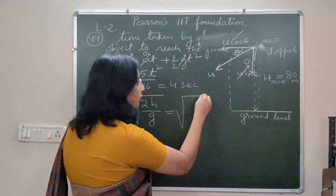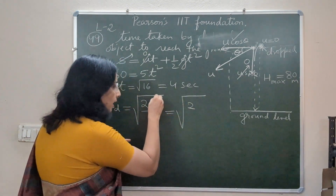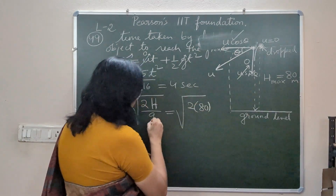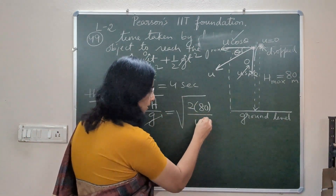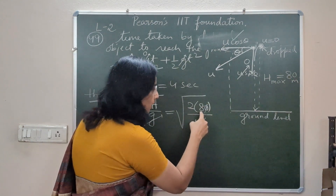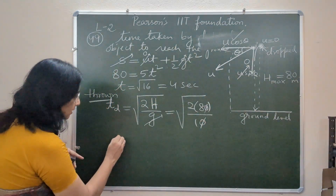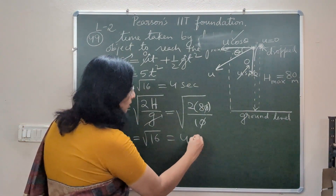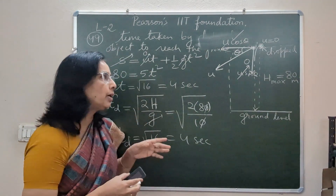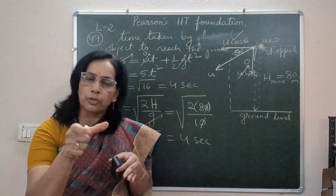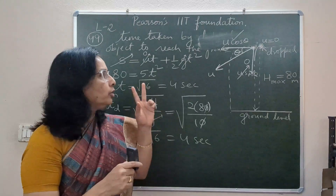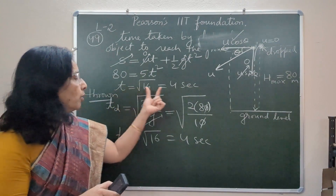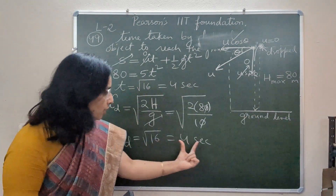The time of descent of the thrown object uses h = 80 meters and g = 10. So t = √(2×80/10) = √16 = 4 seconds. Therefore, from a particular height, whether an object is dropped or thrown horizontally, both objects reach the ground at the same time — both reach the ground after 4 seconds.